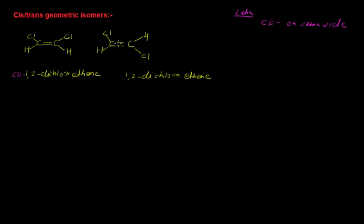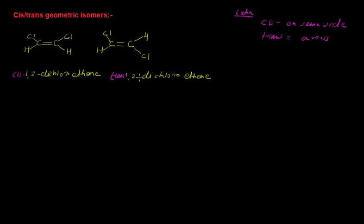In the second case, both the chlorine atoms are present on opposite sides. So we may call it trans. Trans means 'across' in Latin — it means both the chlorine atoms are on opposite sides. For this compound we can say it as trans-1,2-dichloroethene.